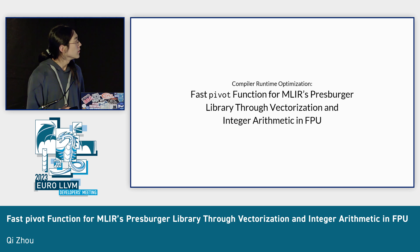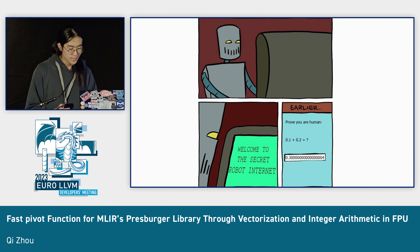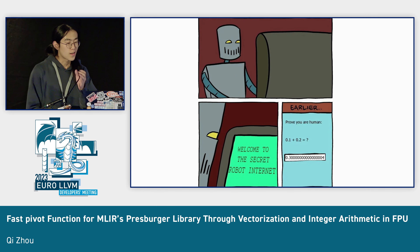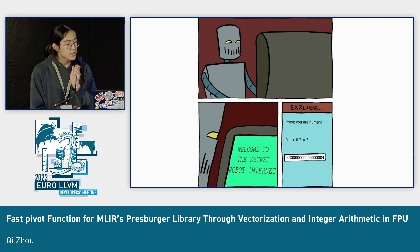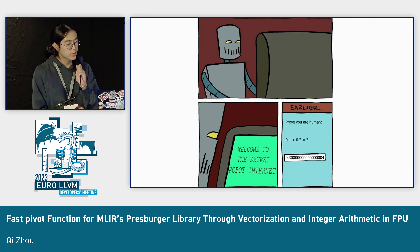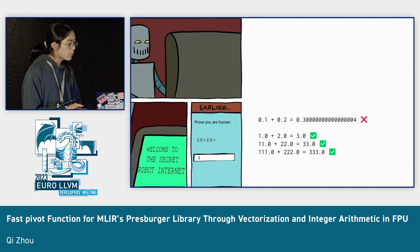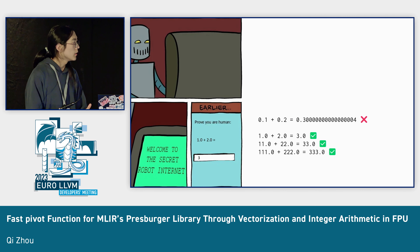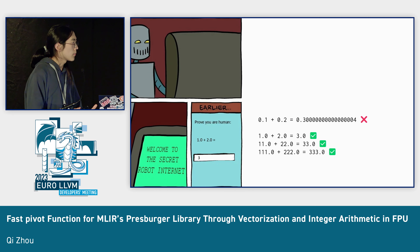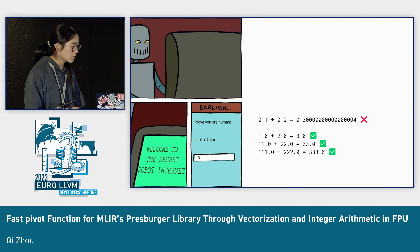Let's get started. Floating points are very likely to be imprecise — they cannot get simple addition correct, for example 0.1 plus 0.2. However, they can be quite correct with integers: 1 plus 2 is always going to be 3, 11 plus 22 is always going to be 33, and 111 plus 222 is always going to be 333.